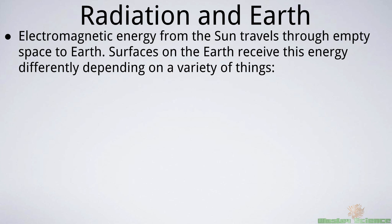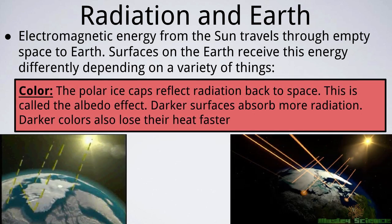Electromagnetic energy, also known as radiation, from the sun travels through empty space to hit Earth, and the surfaces of the Earth receive this energy differently depending on a variety of things. Let's first talk about color. The polar ice caps reflect radiation back to space — they're white and shiny. This is called the albedo effect, a very important concept you'll see again when we get into geology. Darker surfaces, like basalt rock, absorb heat. On the contrary, darker colors also lose their heat faster, so basalt loses heat as soon as the sun goes down, while ice caps retain and hold heat longer than dark surfaces.